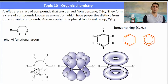More about the arenes. Well, they're a class of compounds derived from benzene. And remember, benzene has the formula C6H6. They form a class of compounds known as aromatics, which have properties that are very different from all of the other compounds. Arenes contain the phenyl functional group, which has the formula C6H5.